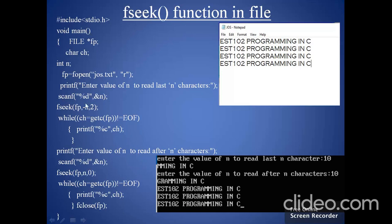The syntax of the fseek function is fseek(fptr, displacement, pointer_position). On the place of fptr, we put fp — the name of the file pointer. On the place of displacement, we put -10, since the value stored in n is 10. On the place of pointer position, we put 2, meaning the pointer will be at the end of the file. Due to the effect of this displacement, the pointer position will move backwards and skip 10 bytes of data, so our pointer position will be present between 'a' and 'm'.